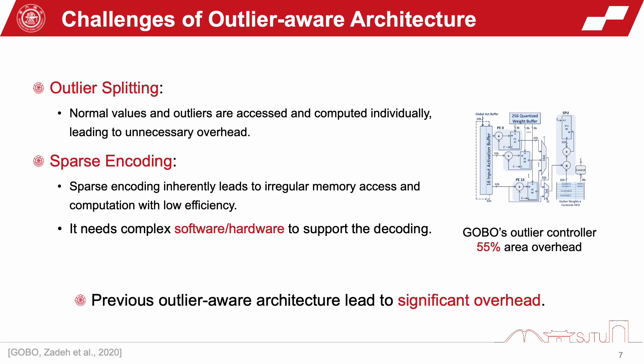However, previous outlier-aware architectures lead to significant overhead, because they use outlier splitting and sparse encoding, which are not compatible with existing hardware such as GPUs.